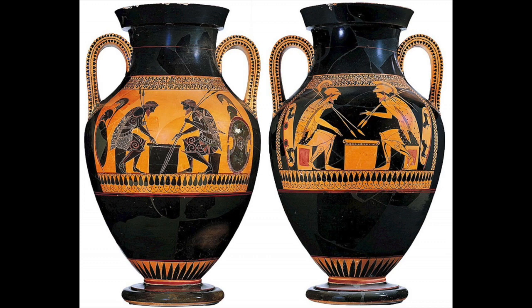For example, the figures on these pots are the positive space. The one on the left is in black and the one on the right is a reddish orange. The space around the figures is the negative space.